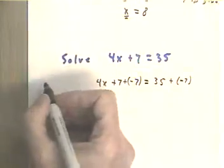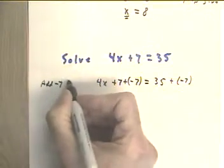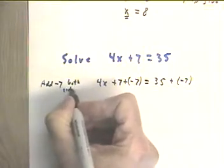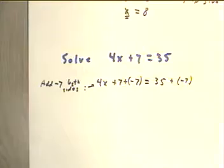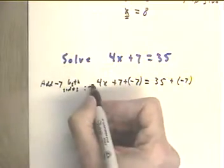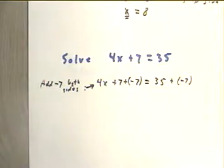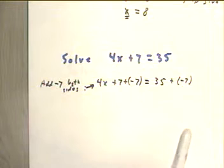I didn't leave myself enough room over here, but I'm going to add negative 7 on both sides to get this. That's an arrow, not a negative sign.